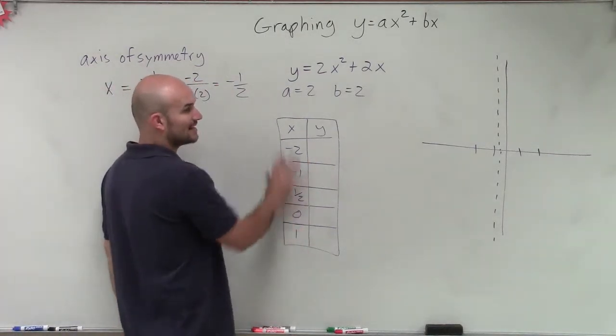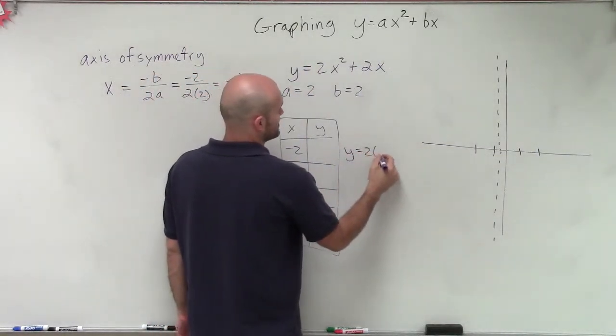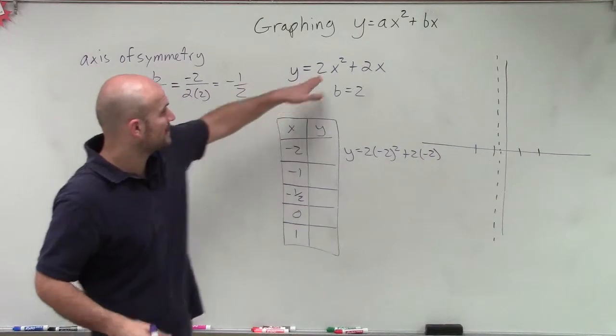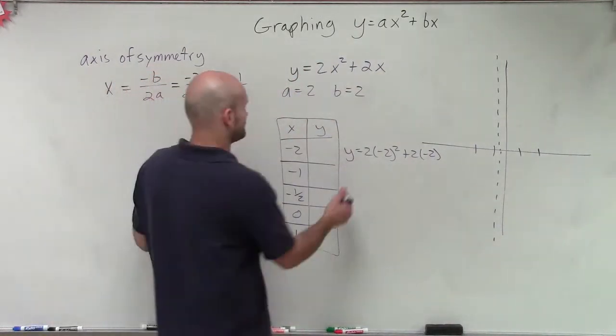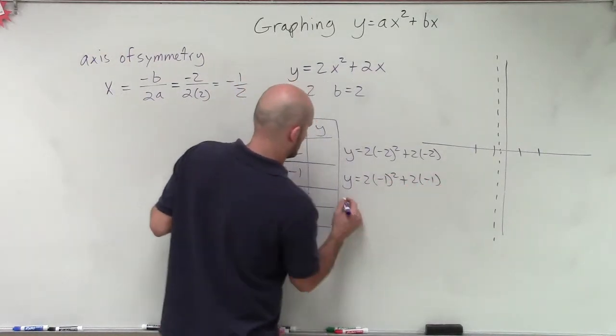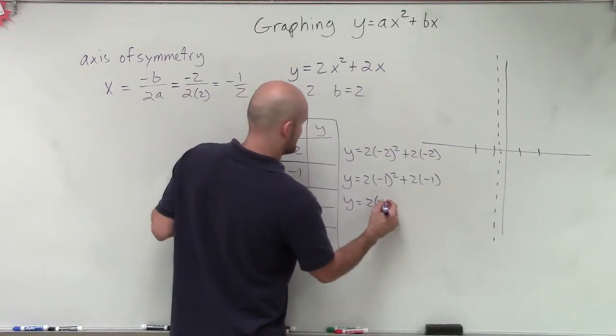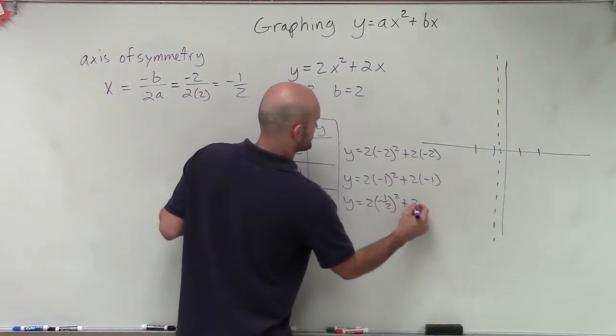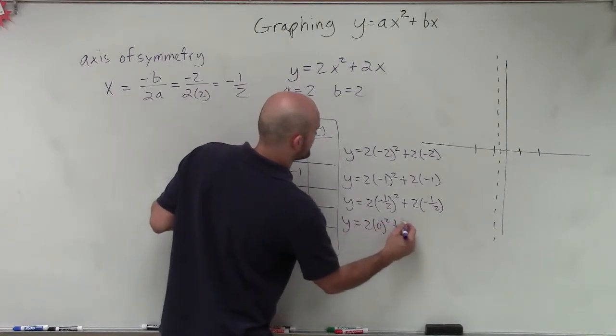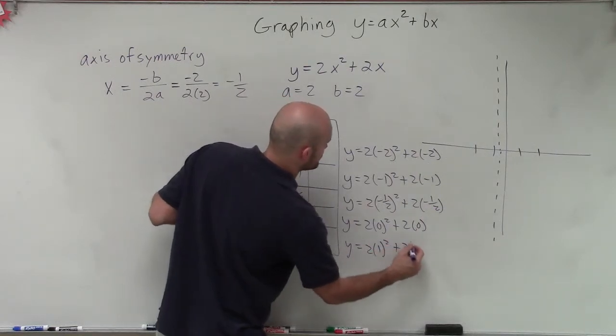Then to evaluate for my points, remember, we just take these x-coordinates and plug them into our equation to find the y-coordinate. So I have y equals 2 times negative 2 squared plus 2 times negative 2. Remember to make sure you plug in your x-coordinate for both values of x inside your equation. Here you have y equals 2 times negative 1 squared plus 2 times negative 1. Here, y equals 2 times negative 1 half squared plus 2 times negative 1 half. y equals 2 times 0 squared plus 2 times 0. And here you have y equals 2 times 1 squared plus 2 times 1.